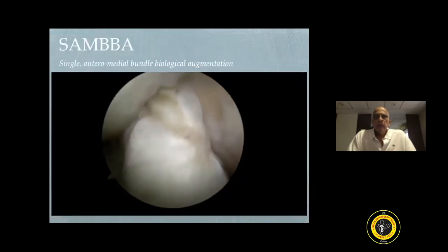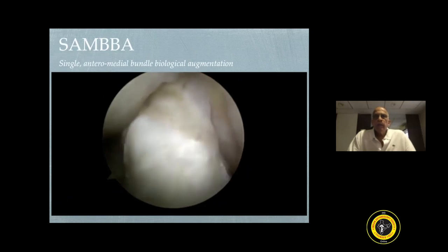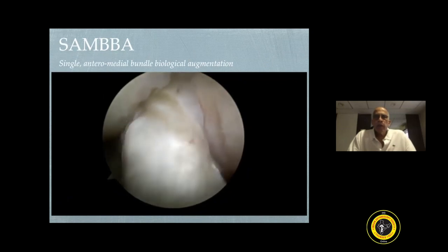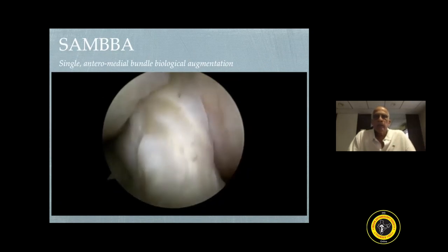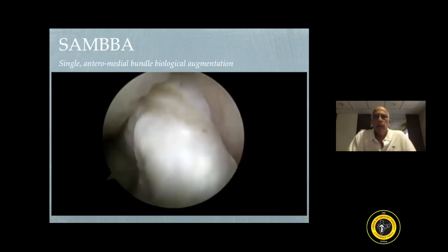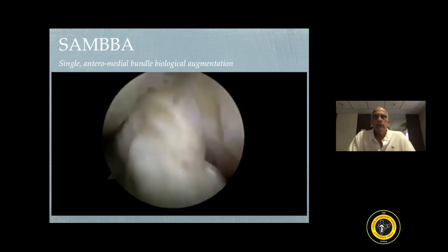The Samba technique is one in which you preserve the native stump of the ACL. You can see the shaver coming through the tibial tunnel — what you see is something like a Samba dance, and hence it is called the Samba technique. Basically what it emphasizes is preservation of the native ACL.